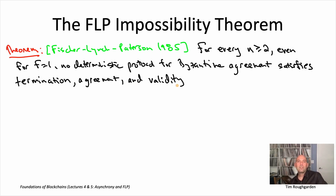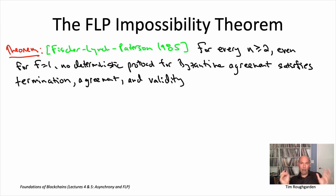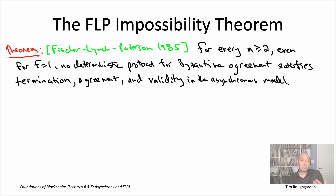Validity says that in the happy event that there's no initial disagreement amongst the honest nodes — if they all start with exactly the same private input — then that common input value should also be their common output value. And we're only asserting this impossibility result in the very demanding asynchronous model, which is important to add to the theorem statement, because this impossibility result does not hold in the synchronous model.